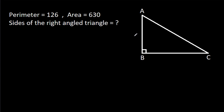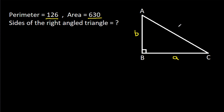In this video, we have been given a right angle triangle whose perimeter is 126 and area is 630. We have to find the side lengths of the triangle. Suppose base BC is A, height AB is B, and hypotenuse AC is C.